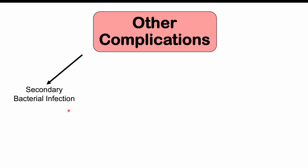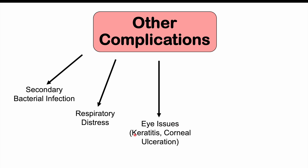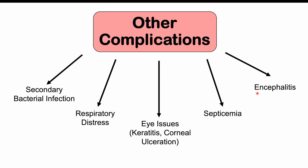Other important complications of M-pox infection include secondary bacterial infection of the open wounds, respiratory distress, and ocular issues like keratitis and corneal ulceration. In severe cases, there can be septicemia or encephalitis — inflammation of the brain. These complications are more likely in immunocompromised patients: the very young, the very old, patients on chemotherapy, those with cancer, diabetics, or those with HIV or AIDS co-infection.